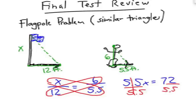So, how'd you do? When you divide this out, you get x equals 13.09, which is about 13.1 feet. The flagpole is a little over 13 feet tall.